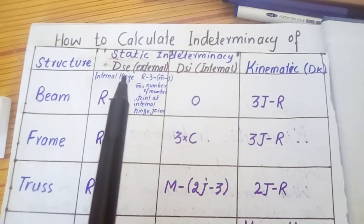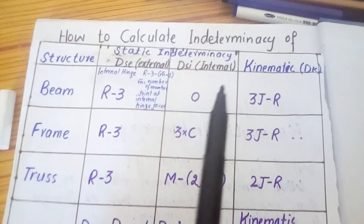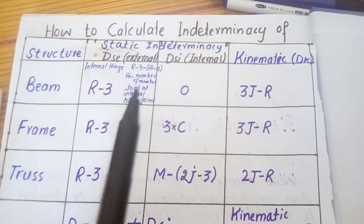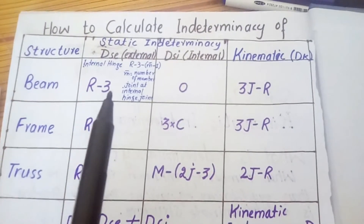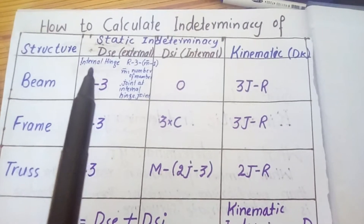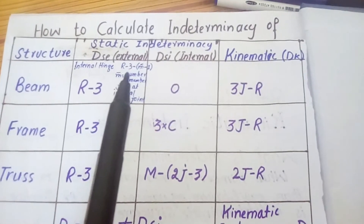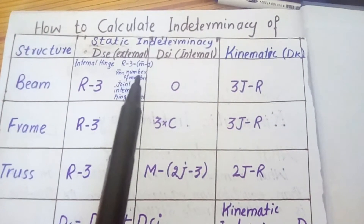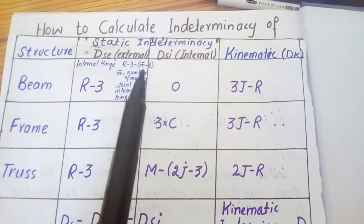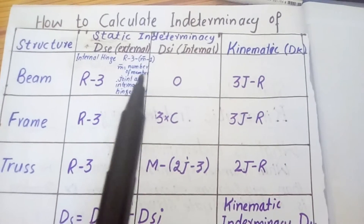As we know, static indeterminacy is the sum of external static indeterminacy and internal static indeterminacy. The formula for external static indeterminacy for a beam is R − 3. Here R represents the reactions. If we have an internal hinge in our beam, then we will use the formula R − 3 − (M' − 1), where M' is the number of members jointed at the internal hinge.